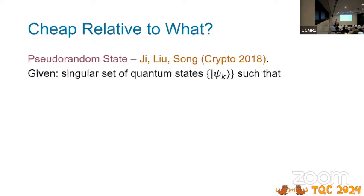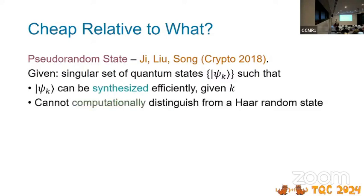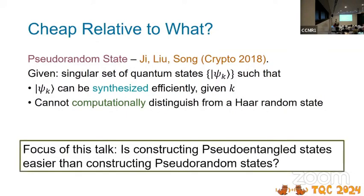So cheap relative to what? The idea of a pseudo-random state - if you've been to the plenaries, you've probably heard enough about this - was introduced by Ji Liu and Song in 2018. It's a very similar idea as pseudo-entanglement, but now we only have one set of states, just called psi K. Psi K has to be synthesized efficiently, and you can't distinguish it from a hard-random state.